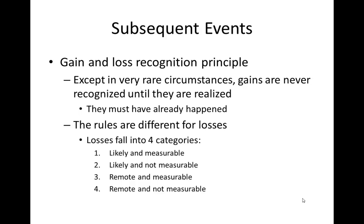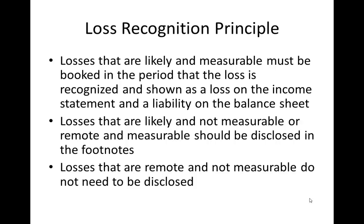The fifth category is Subsequent events. First, the gain and loss recognition principle — which seems pretty unfair, but this is the way it is. Except in very rare circumstances, gains are never recognized until they are realized; they must have already happened. The only exception is trading or available-for-sale securities, and with available-for-sale, the gain doesn't even hit the income statement. Losses fall into four categories: whether the loss is likely and measurable; likely and not measurable; remote but measurable; or remote and not measurable.